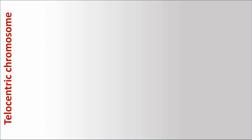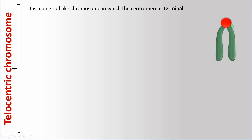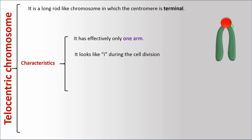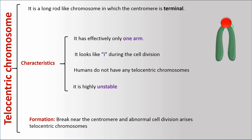A telocentric chromosome is a long rod-like chromosome in which the centromere is terminal. It has effectively only one arm and looks like the letter I during cell division. Humans do not have any telocentric chromosomes. It is highly unstable. Telocentric chromosomes arise from breaks near the centromere and abnormal cell division.